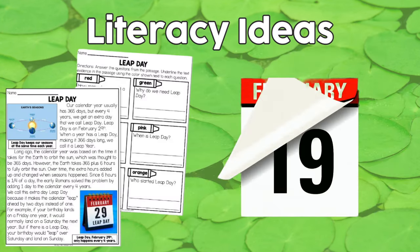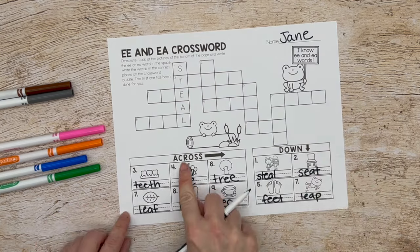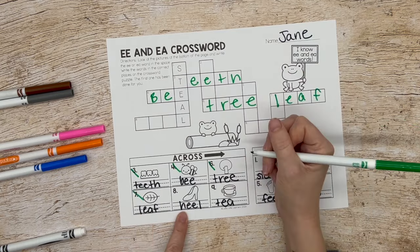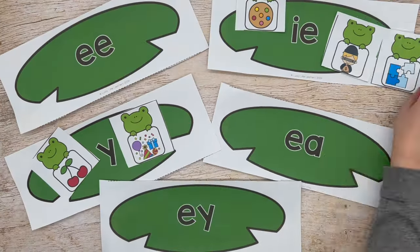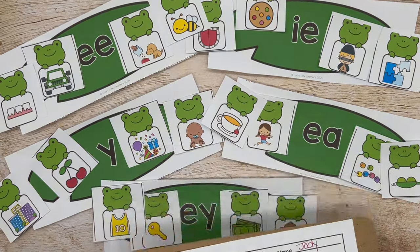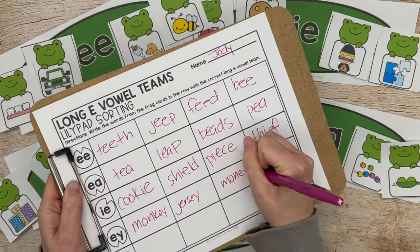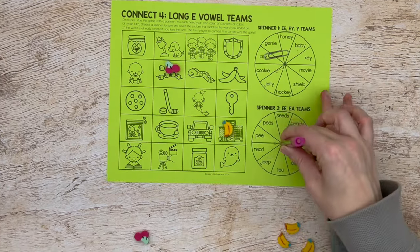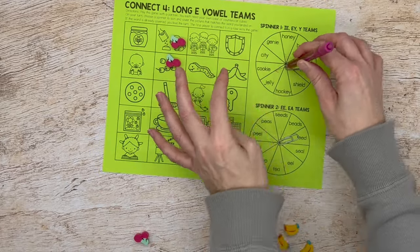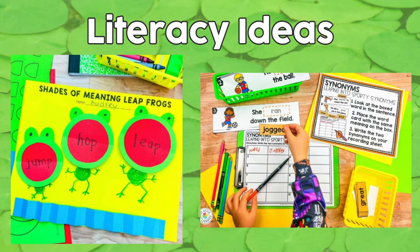For small groups, we're going to focus on this leap day reading passage. Now let's talk centers. I'm going to work on long E vowel teams because they go with the word leap. I'll have a crossword puzzle for one center, and another center will sort by all the long E vowel team groups — done individually, in partners, or as a group. We love partner games, so we're doing Connect Four with long E vowel teams. A couple extra literacy ideas could be shades of meaning work or working on a synonyms center.